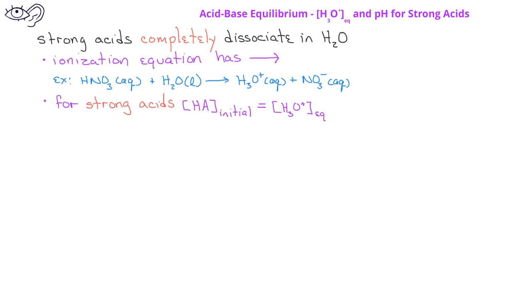As a result, it should be clear that for strong acids, the initial concentration of the strong acid, in this case nitric acid, is going to be equal to the equilibrium concentration of the hydronium ion.